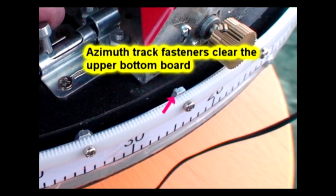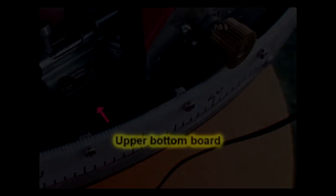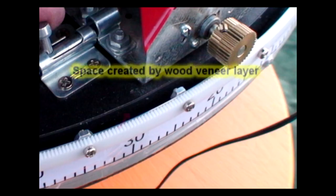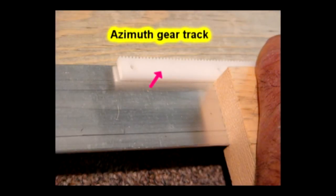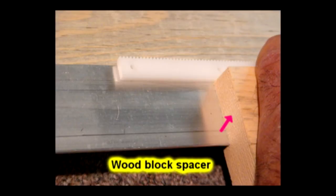In order for the azimuth track fasteners to clear the upper board of the Dobsonian mount, a spacer is made by gluing several strips of wood veneer ripped from a three-quarter inch thick hardwood board. A pin nailer or staple gun holds the strips in place as subsequent layers are added until the glue sets. To ensure the precise alignment of the gear track to the aluminum band support, a wood block spacer is used.